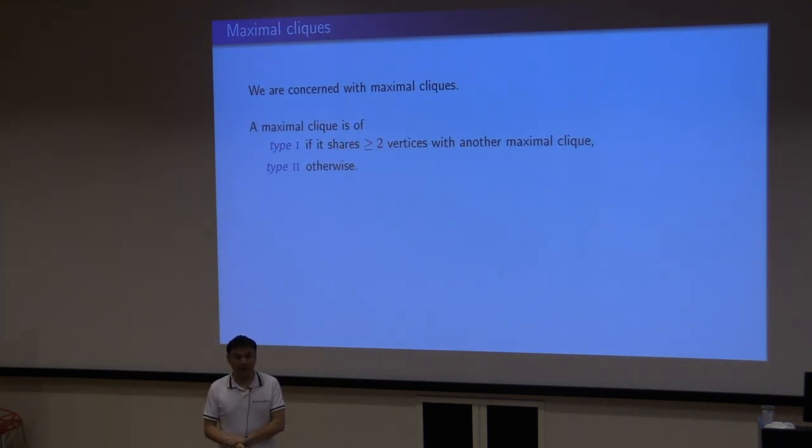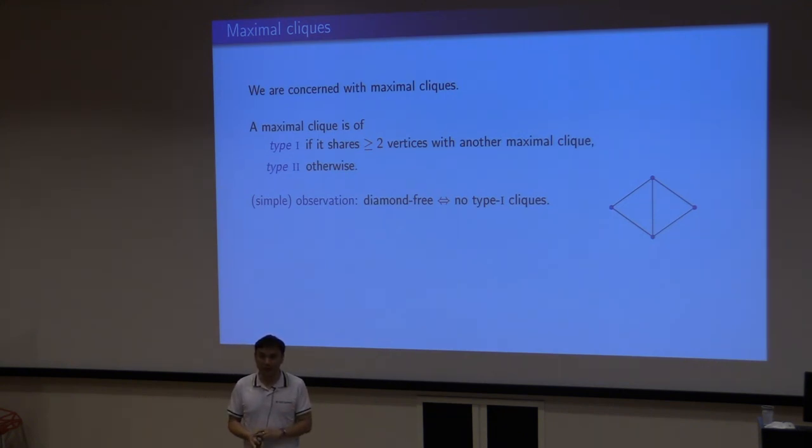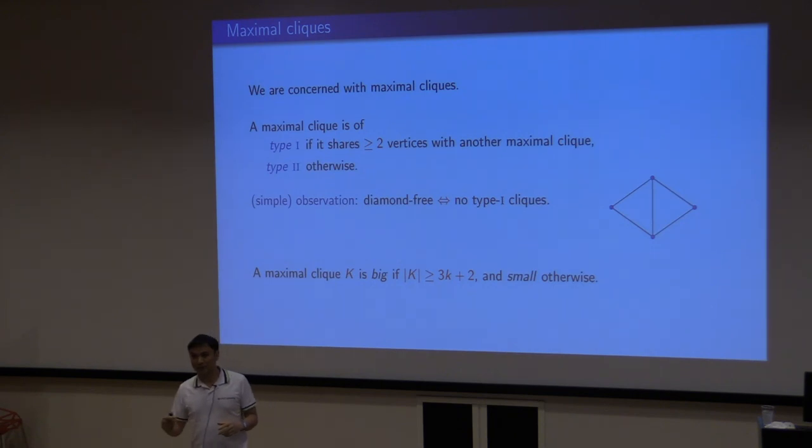We are playing with maximum cliques. We say a maximum clique is type 1—you can think that's bad, bad maximum cliques—if it intersects another one with at least two vertices. Otherwise, it's good, type 2. A basic observation is, a graph is diamond-free if and only if it has no bad maximum clique. If everything is good, the graph is diamond-free. We also need a threshold for what's a large, big clique. We happen to choose a kind of arbitrary number, 3k plus 1, but not that arbitrary.